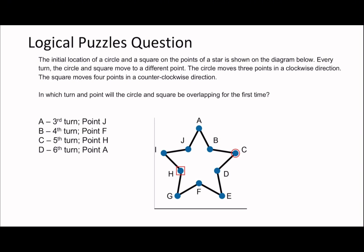What I like to do is number the points one to ten, starting here and going clockwise. The question says the initial location of a circle and a square on the points of a star is shown in the diagram. Every turn the circle and square move to a different point — in which turn and point will they be overlapping?